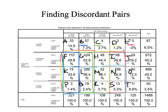Then we move on to cell I. For cell I, the discordant cells are K, L, M, P, Q, R. Then we move on to cell H, and cell H's discordant cells are K, L, P, Q. Then we move on to cell G, and cell G's discordant cells are K and P. Cell F does not have any discordant pairs — there's nothing that can be lower than F on highest degree.